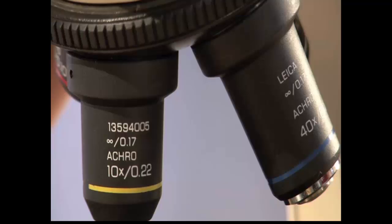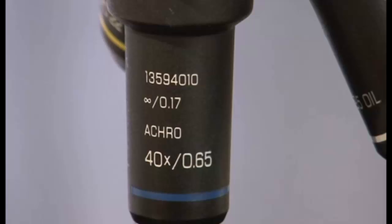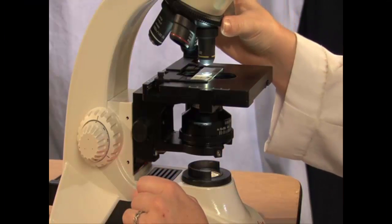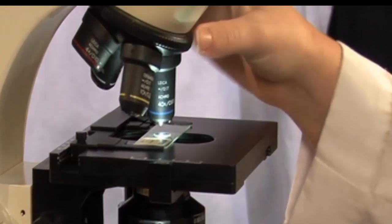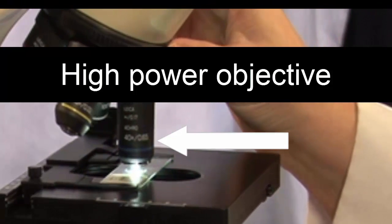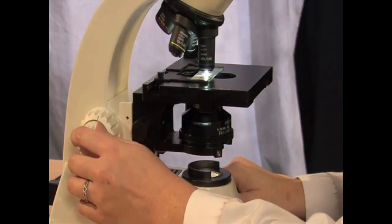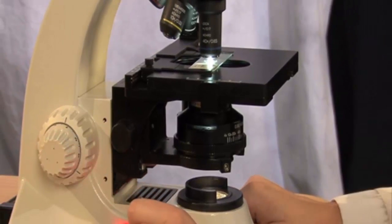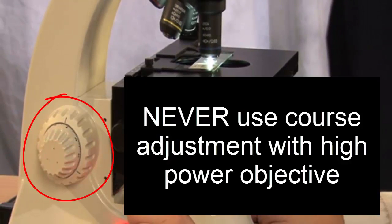After you have viewed your specimen with the low power objective, you are ready to move to the high power objective. Just like we did with the low power objective, turn the revolving nose piece so that the next objective will click into place. Put your eyes to the ocular lenses and you should see your letter E. It may be out of focus, but that's okay. To get a sharp, crisp image, use the fine adjustment knobs only. Never use the coarse adjustment knob with this high power objective.